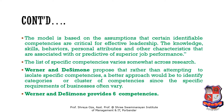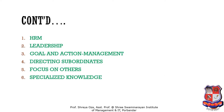The third approach is developing process models. The model is based on the assumption that certain identifiable competencies are critical for effective leadership — the knowledge, skills, behaviors, personal attributes, and other characteristics associated with or predictive of superior job performance. Werner and DeSimone propose that rather than attempting to isolate specific competencies, a better approach would be to identify categories or clusters of competencies. They provide six competency clusters: HRM, leadership, goal and action management, directing subordinates, focus on others, and specialized knowledge.